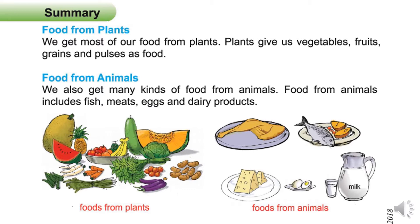Food from animals. We also get many kinds of food from animals. Food from animals includes fish, meats, eggs and dairy products.